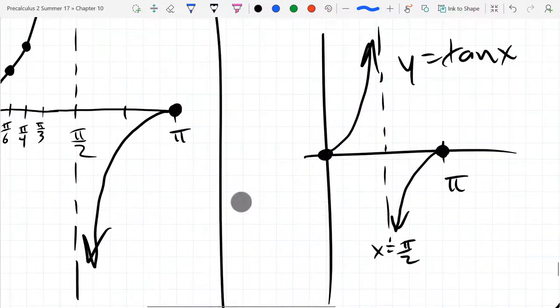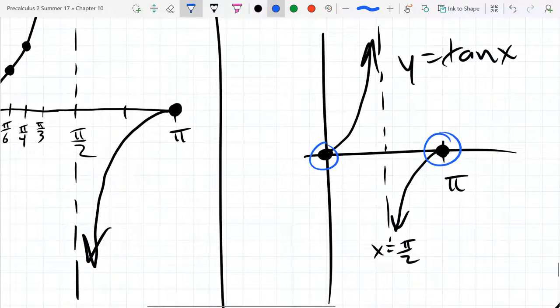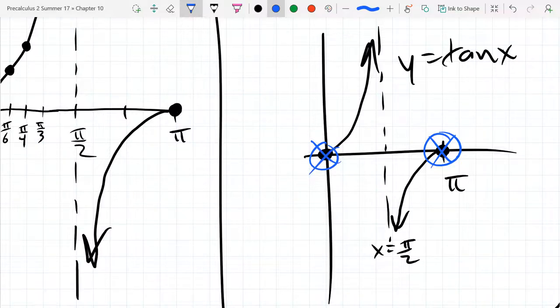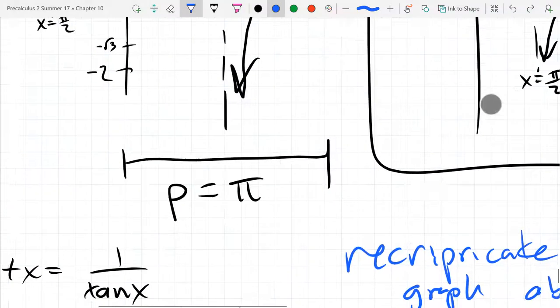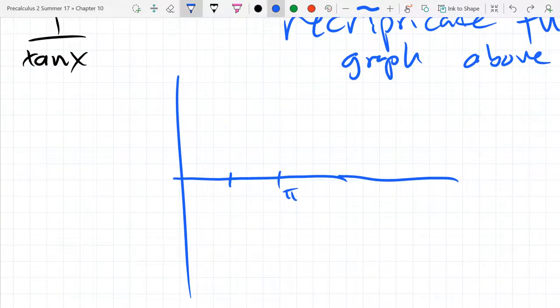All right reciprocate that means x-intercepts are going to become vertical asymptotes. So let's get those going first vertical asymptote so at the beginning and end of our period there's further now. Get a different color here. That's too skinny. That'll work vertical asymptote and vertical asymptote right on the y-axis.